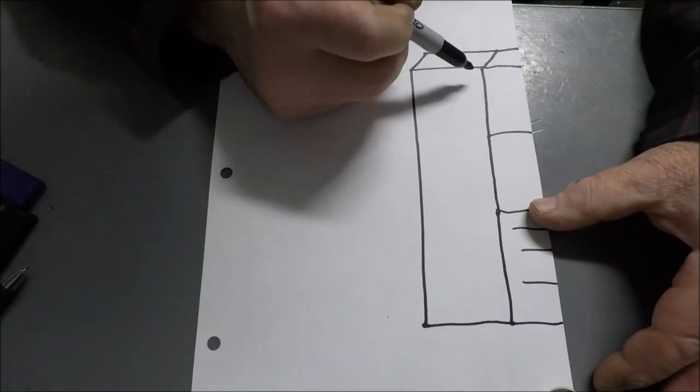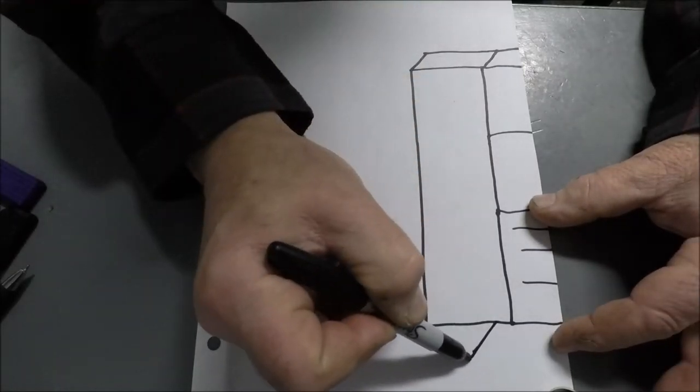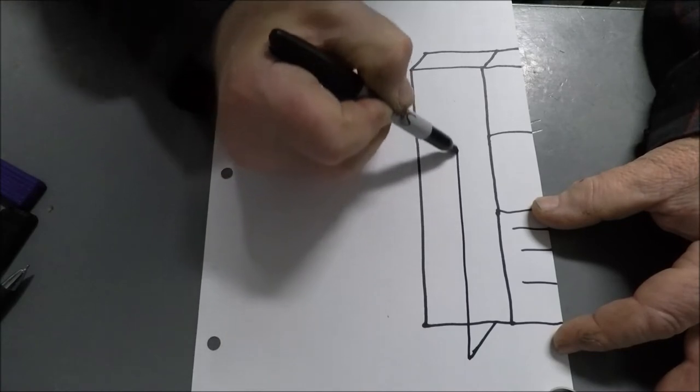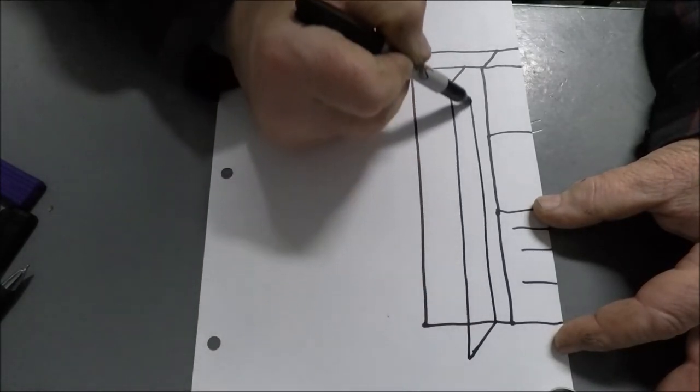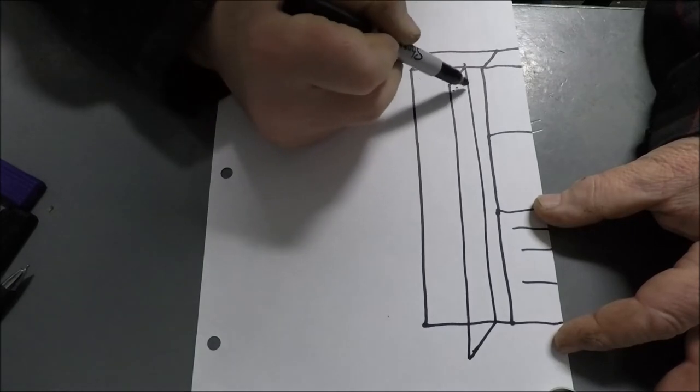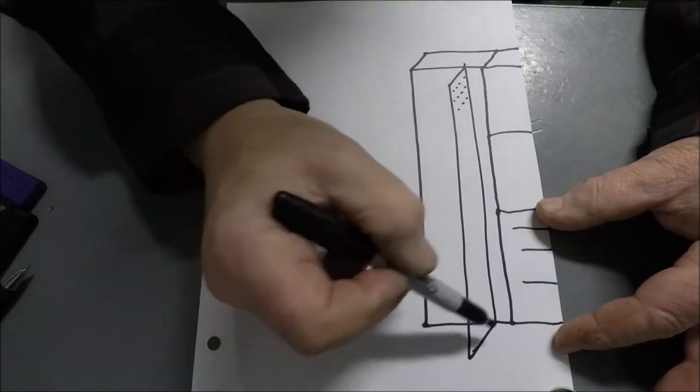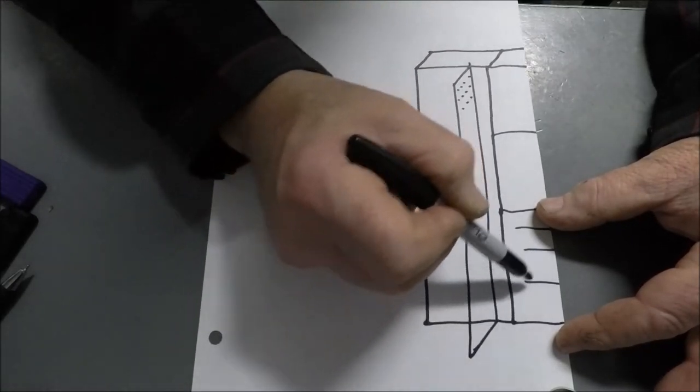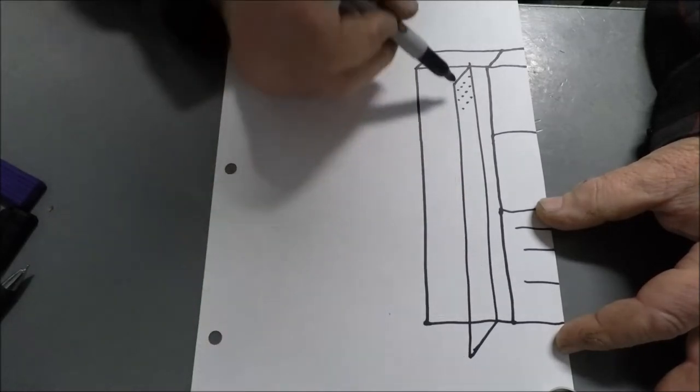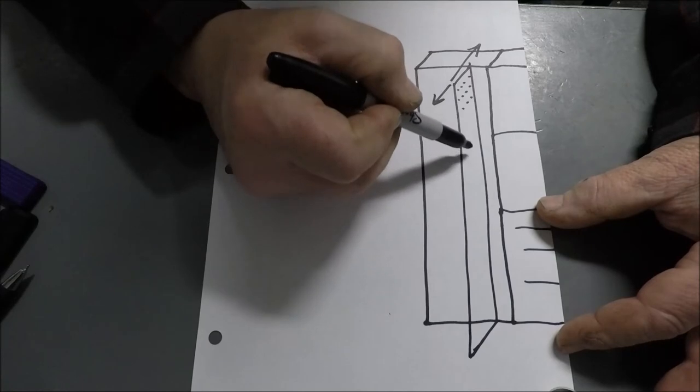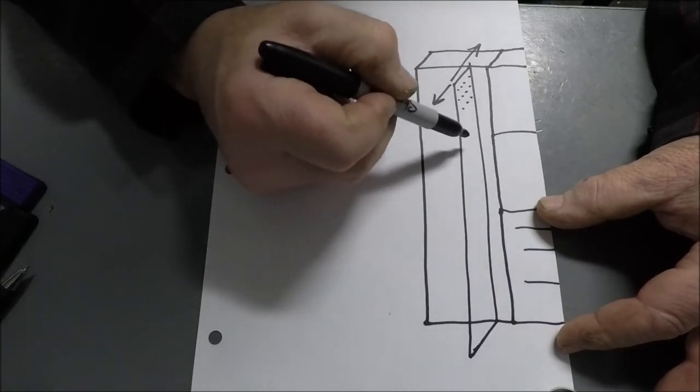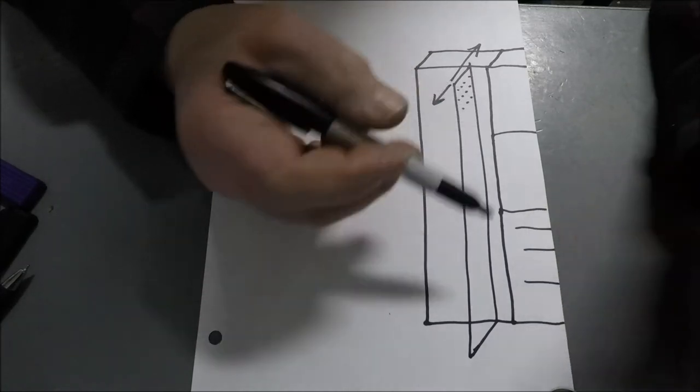So basically what you'll have is, let's just draw one on here. See, that's a pull out pegboard. Alright. It's going to be on slide, so it'll slide in and out of this cabinet. And on this pegboard then, I'll have two sides to work with to hang tools.